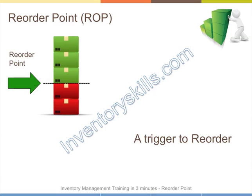The reorder point is just a trigger that tells you that you need to replenish some of your stock. On this diagram, I've simulated some stock, and we're looking for this line here — the reorder point. When the stock is decreasing, it reaches this level, and that's a trigger to say, I need to order some. You place an order with your supplier, and as the supplier's delivery lead time passes, the stock is decreasing, and hopefully the supplier delivers on time before your stock reaches zero.